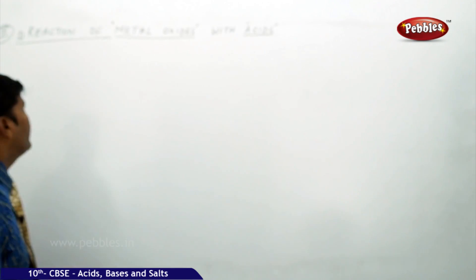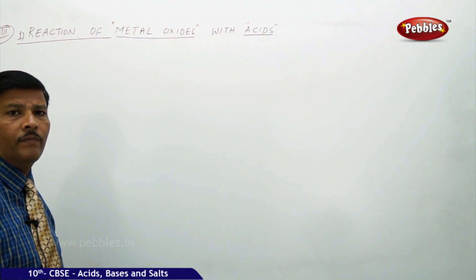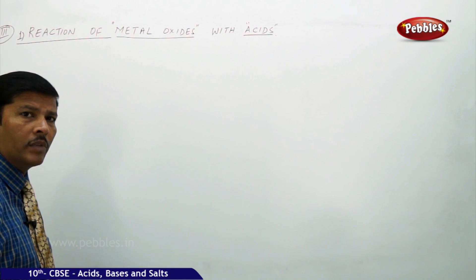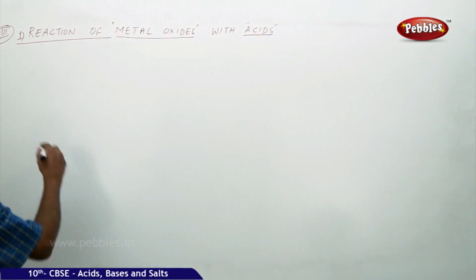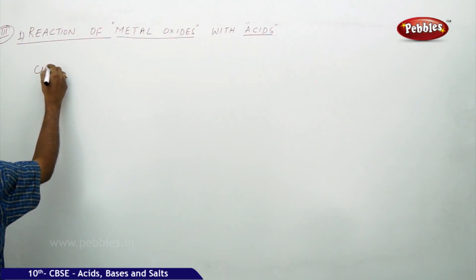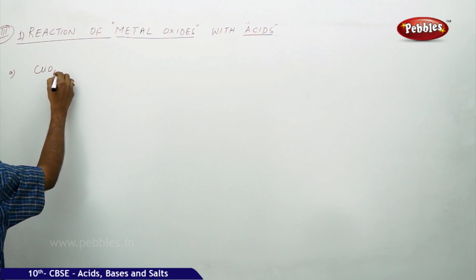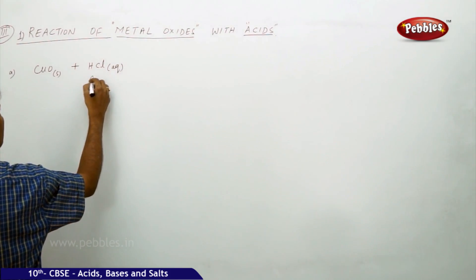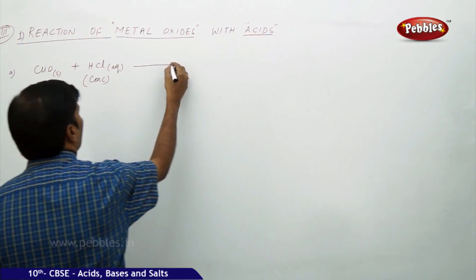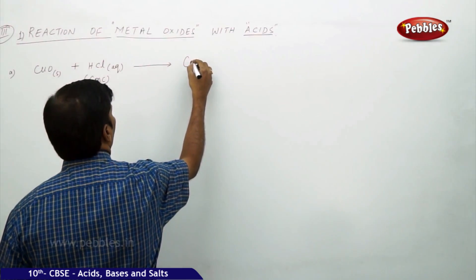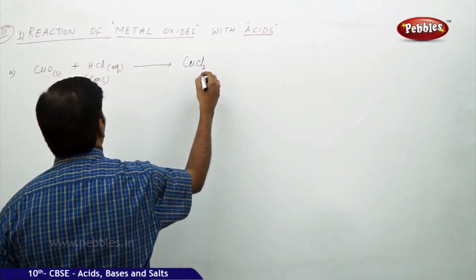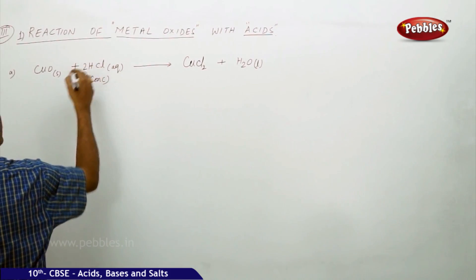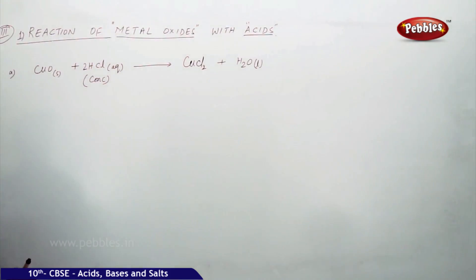We will continue with the next topic: the reaction of metal oxides with acids. Let us see how metal oxides can react with acids, what color change takes place, and what mechanism is involved. For example, take cupric oxide, which is a solid. If it is added to aqueous concentrated HCl, it gives cupric chloride plus liquid H₂O.